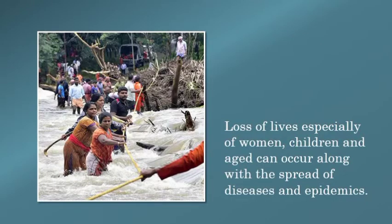Loss of lives, especially of women, children and aged, can occur along with the spread of diseases and epidemics. جانی نقصان بھی ہوگا اور زیادہ تر عورتوں، بچوں اور بڑوں کی deaths ہوتی ہیں کیونکہ وہ پانی کو hold نہیں کر سکتے — ان کے اندر اتنی strength نہیں ہوتی۔ Secondly، جب پانی دیر تک کھڑا رہے گا تو اس کی وجہ سے بہت ساری بیماریاں بھی پھیل جائیں گی — for example malaria، dengue — یہ بیماریاں پانی کے زیادہ دن رکنے کی وجہ سے پھیل سکتی ہیں۔